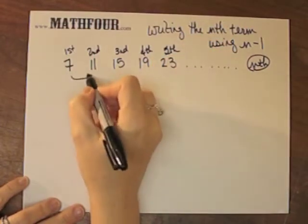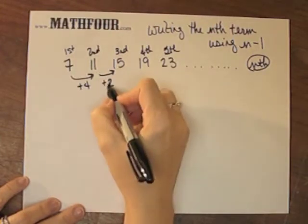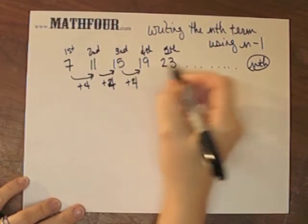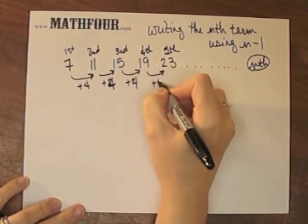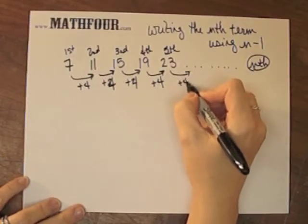So I can figure out what's going on between these two. I'm adding 4. Oh look, I'm adding 4 again. Add 4 again, adding 4 again. So clearly, to get to the next one, I'm going to add 4.